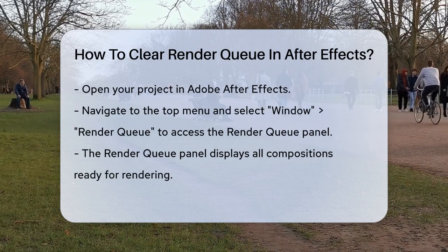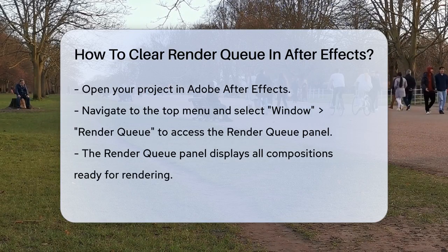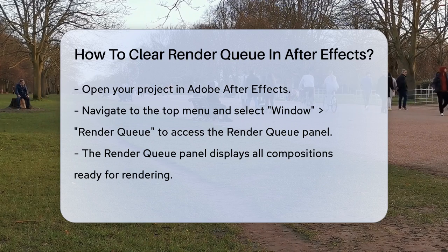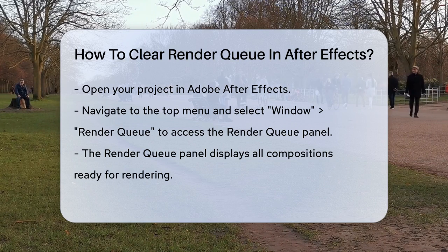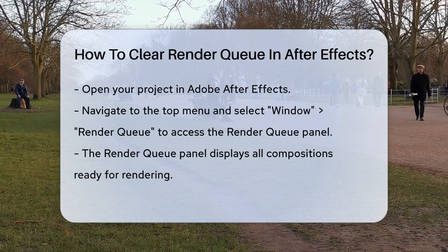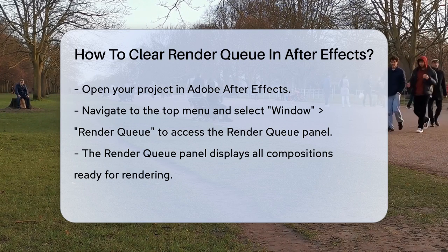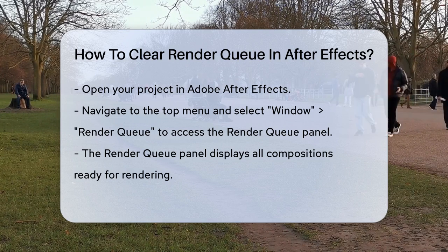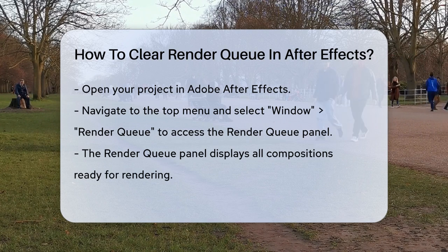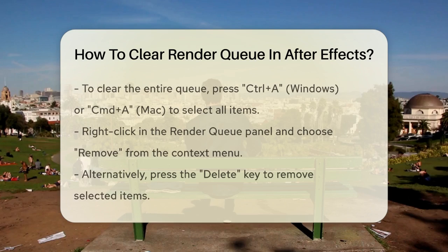First, you need to open your project in Adobe After Effects. Once you're in, go to the top menu and select Window > Render Queue to open the Render Queue panel. This panel is where you manage all your render items. In the Render Queue panel, you'll see a list of all the compositions that are ready to be rendered.